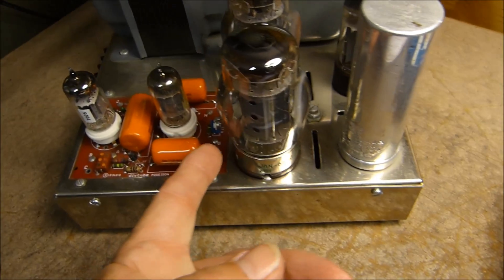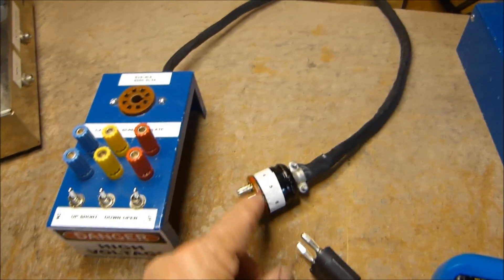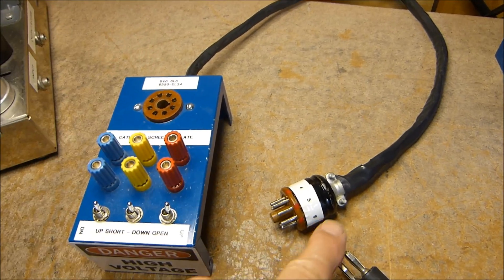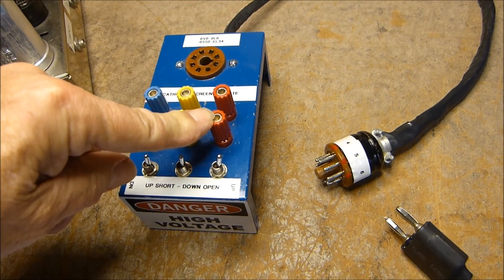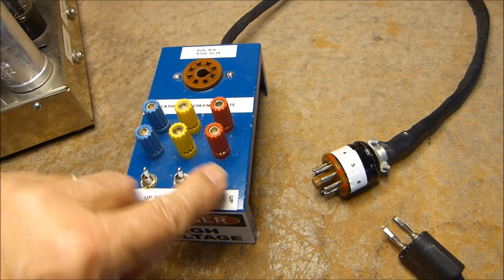The tube plugs in here. I'll plug it in and show you. Pin 1 here goes to pin 1 here, 2 to 2. Pin 3 here goes to the plate, and then it goes over to the socket.